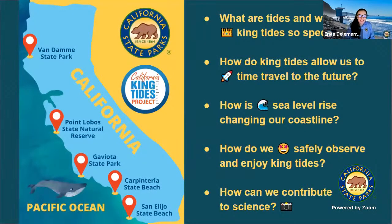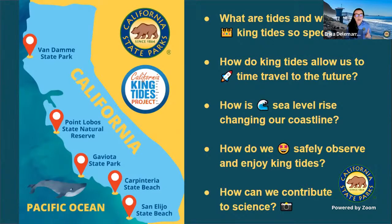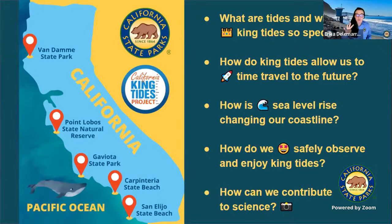Today we are going to be cruising from the south all the way up to the north. As we float up the coast, we are going to be answering some really important questions. Students, you may want to have a pencil or pen and paper. Number one: what are tides and what make King Tides so special? Number two: how do King Tides let us time travel into the future? Number three: how is sea level rise changing the California coastline? Number four: how can we safely observe and enjoy the King Tides? And number five: how can we contribute to science?